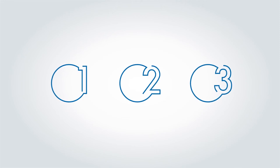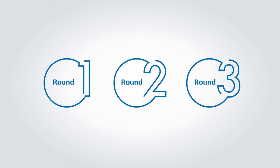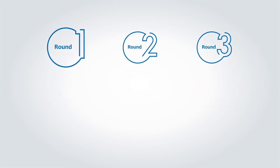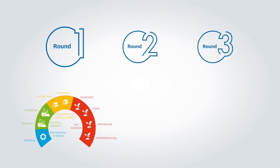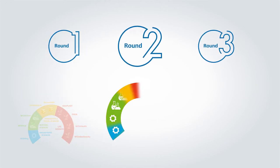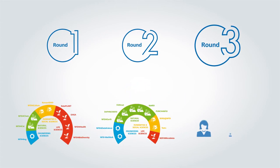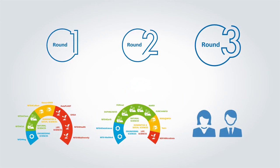The upcoming review process is an important step in the overall process of building and establishing the NFDI. This process consists of three rounds in which consortia are selected. In 2019 and 2020, and 2020 and 2021, the first two rounds took place and 19 consortia were selected for funding. You are part of the third, and for the present, final round.